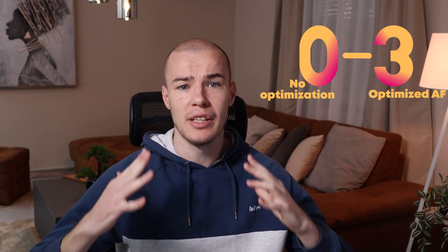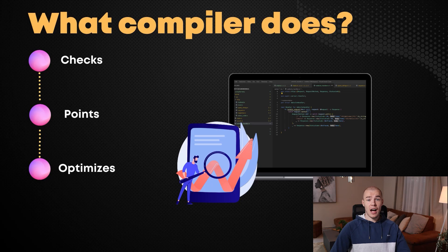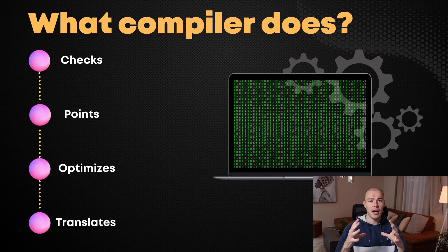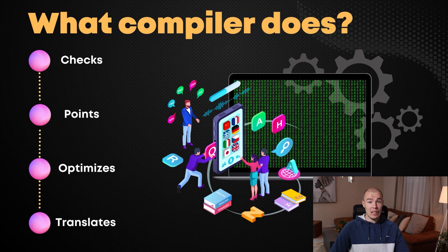Rust does allow us to specify a level of optimization it's going to perform, going from level zero to level three. Zero means it's not going to optimize our code at all, and three means it's going to try to optimize it as much as computerly possible. After all of this is done, the compiler translates this optimized piece of code into machine language, which is the only language our computer can understand.